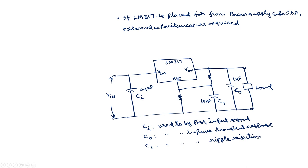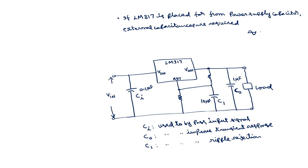This voltage regulator, in addition to providing a constant output voltage, also rejects ripples. In a full wave rectifier, after passing through a capacitive filter, we get some ripples due to charging and discharging of the capacitor — we do not get a perfect DC signal. In order to reject those ripples, we use capacitor C1. The LM317 has 80 dB ripple rejection.